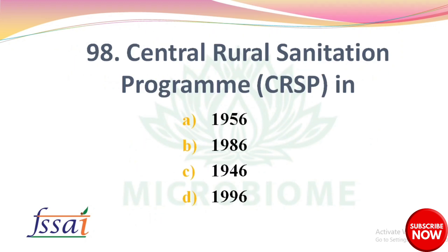The Central Rural Sanitation Programme was launched in which year? Options: A) 1956, B) 1986, C) 1946, D) 1996. The right answer is option B: 1986.